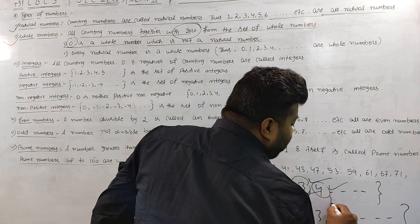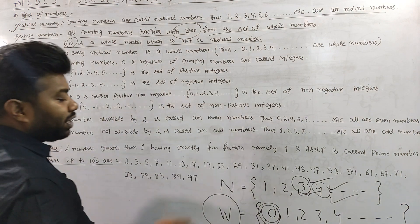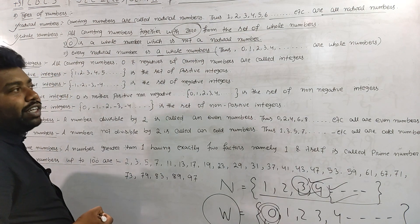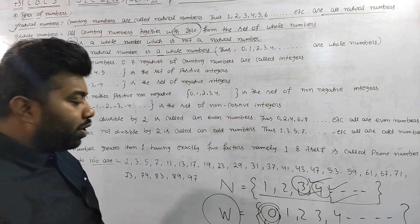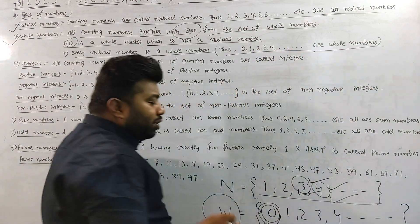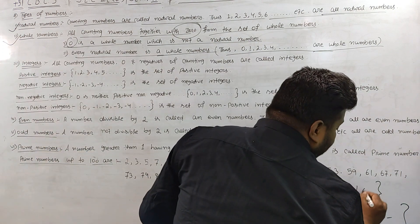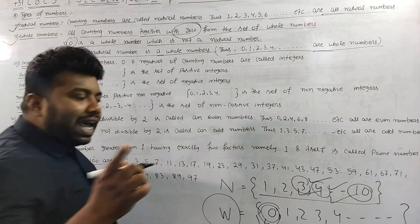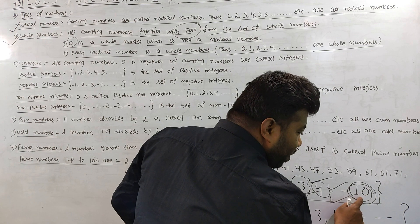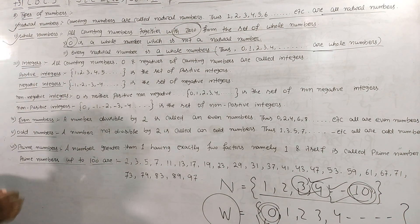So on the first point, natural numbers start from 1. But whole numbers include 0 as well. Every natural number is a whole number. But zero is a whole number and not a natural number. So if you have 0, that is a whole number. If you have 2, that is both a natural number and a whole number — not 0, it's 2. So natural number and whole number — it's clear.